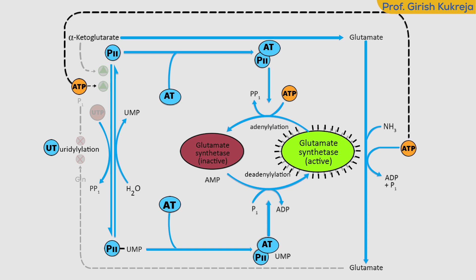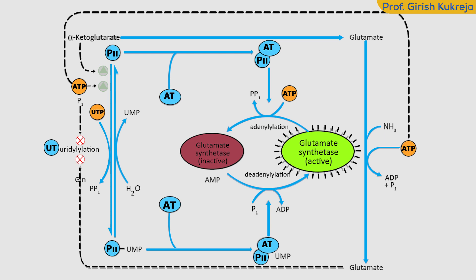Both uridylation and deuridylation are catalyzed by the enzyme uridyl transferase. Uridylation is inhibited by binding of glutamine and inorganic phosphate to uridyl transferase, while its activity is stimulated by binding of alpha-ketoglutarate and ATP to P2.